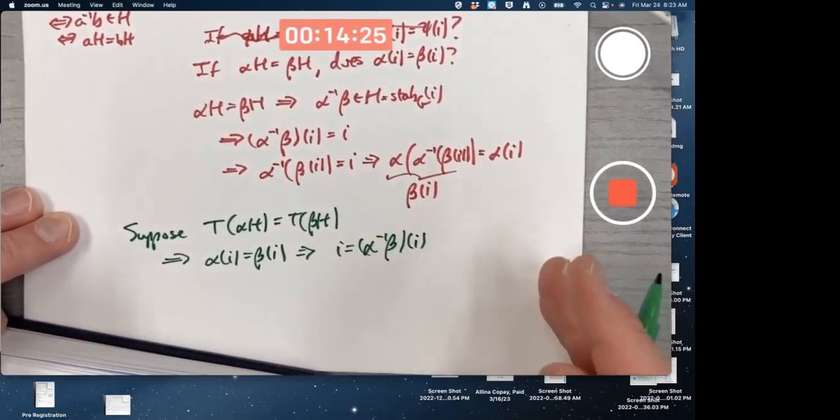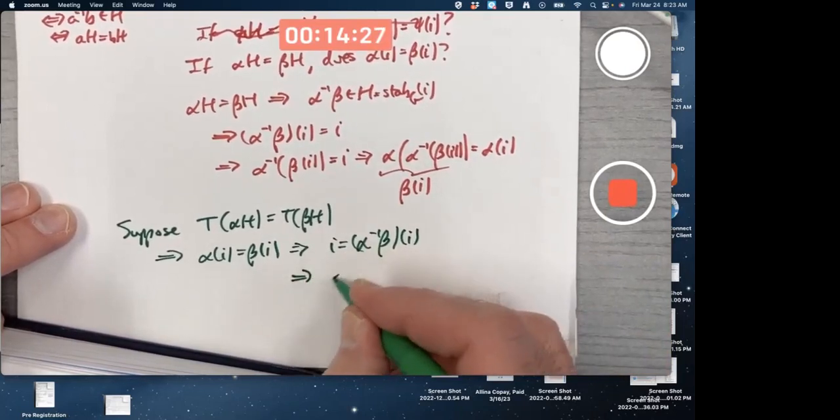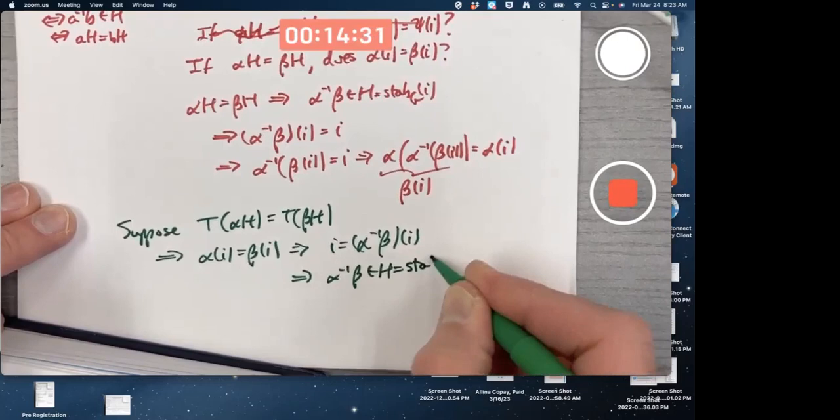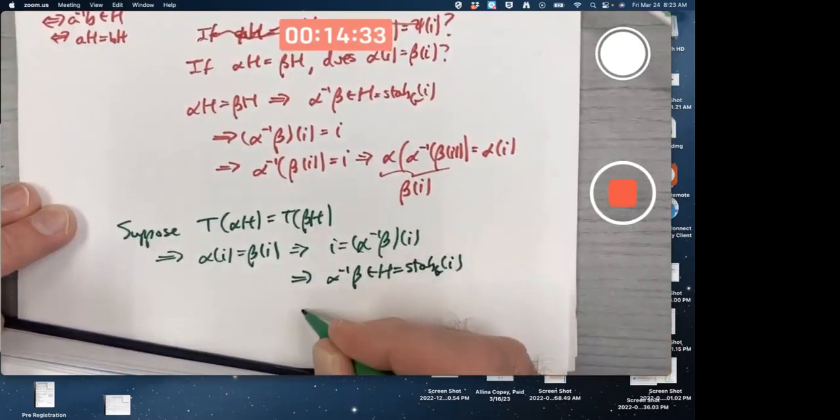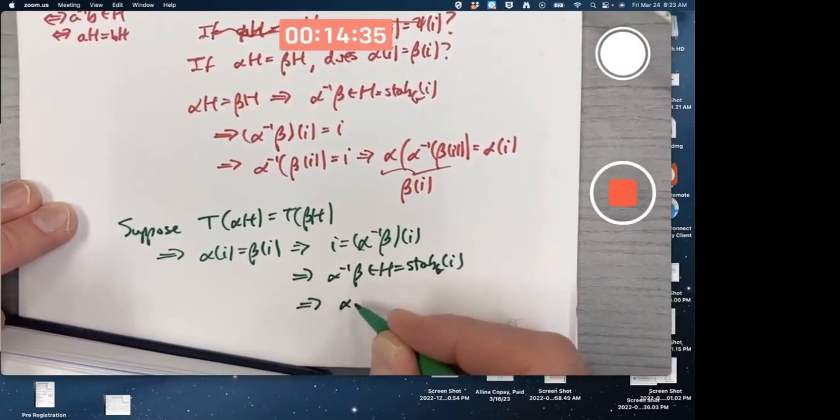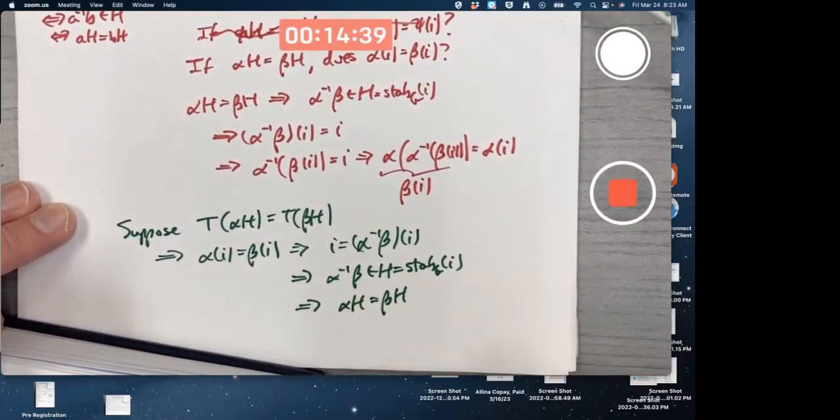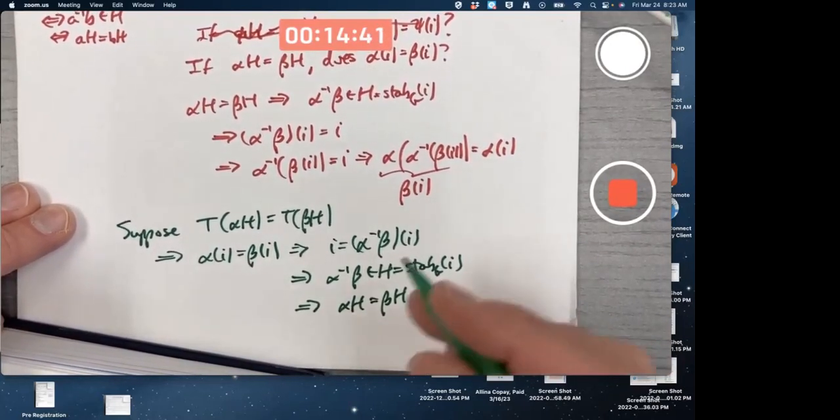Skipping the step there. In other words, alpha inverse beta is in H which is the stabilizer, and that implies alpha H equals beta H. The left cosets are the same. Yes, this is the reverse argument.